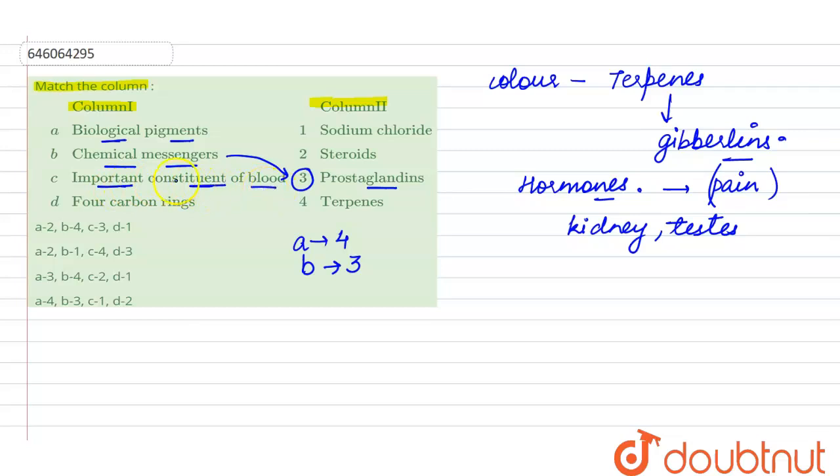The third one is the important constituents of the blood. Blood has cells and plasma. In the plasma there are various types of electrolytes present. These electrolytes include sodium and potassium which are the common electrolytes. So important constituents of the blood, C can match with one on the other side.